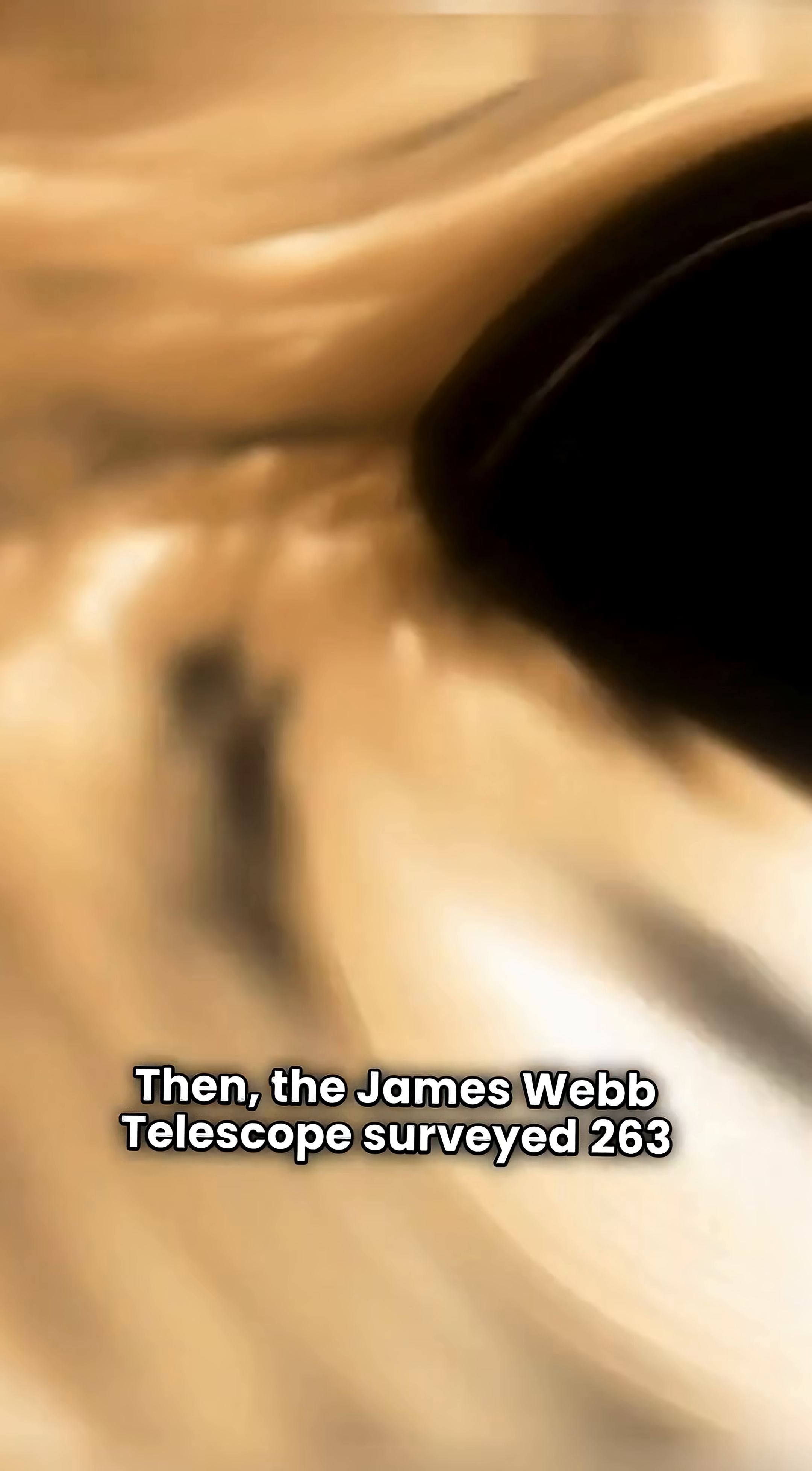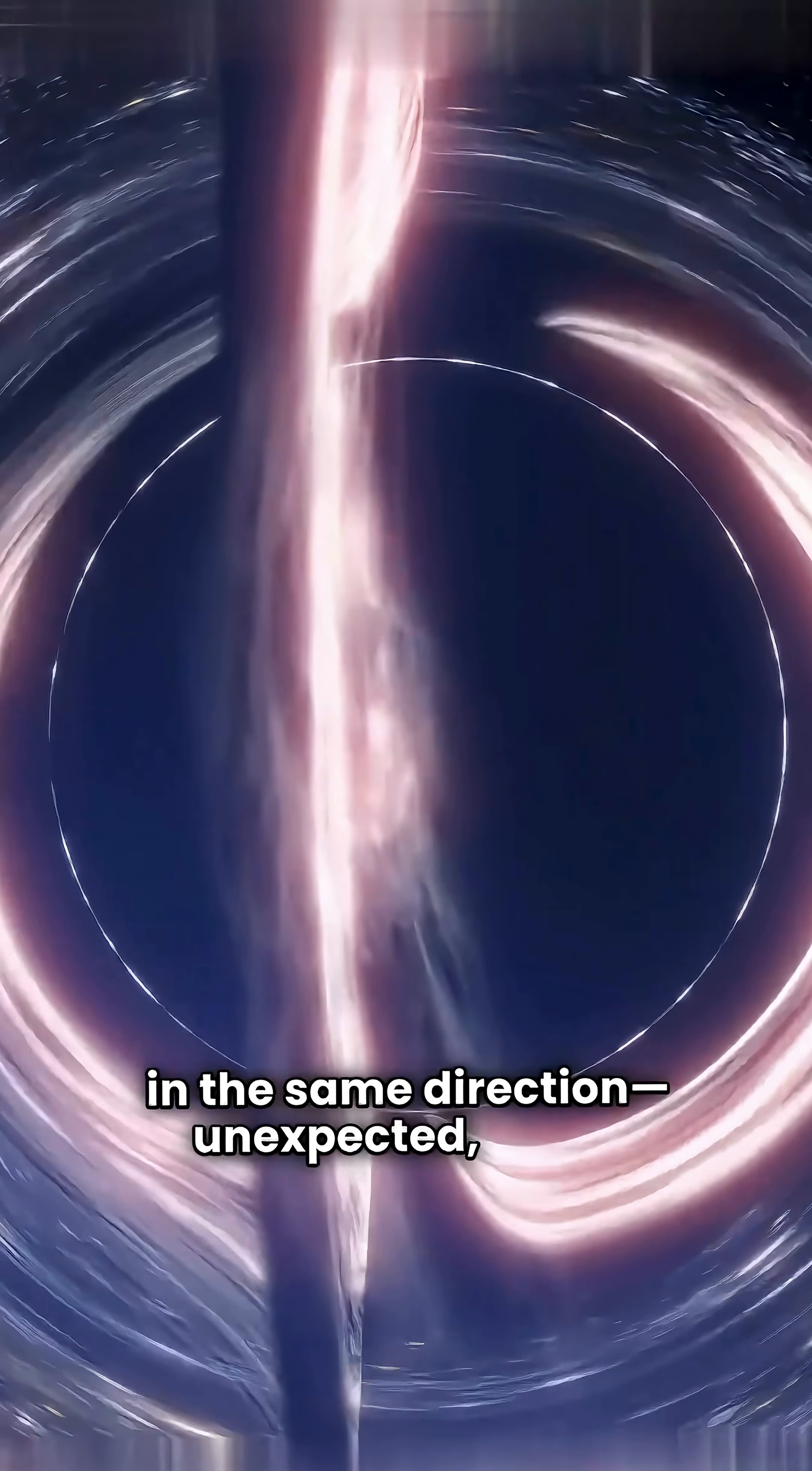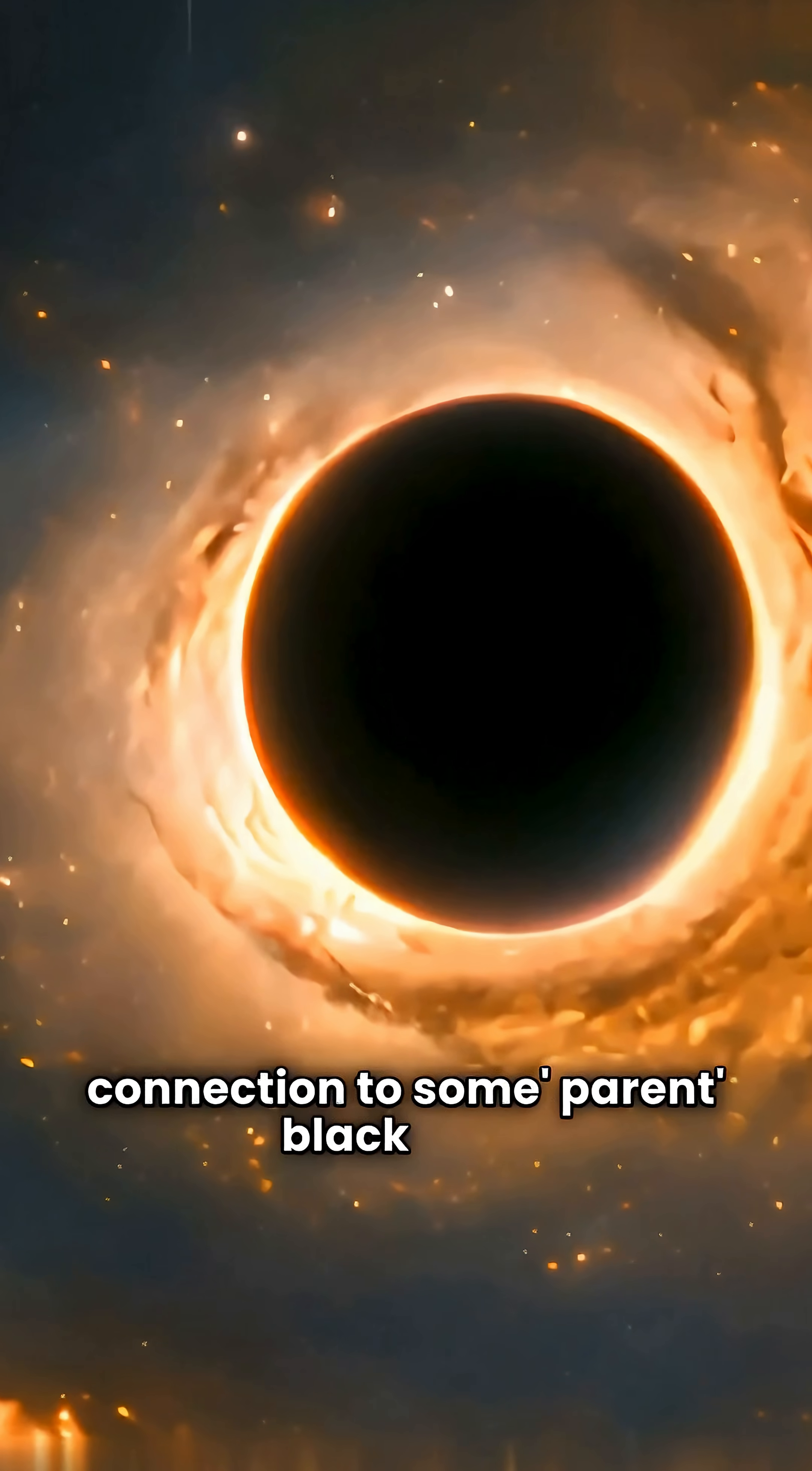Then, the James Webb Telescope surveyed 263 ancient galaxies and found something strange. Over two-thirds of them spin in the same direction. Unexpected, right? This uniform rotation hints at a connection to some parent black hole.